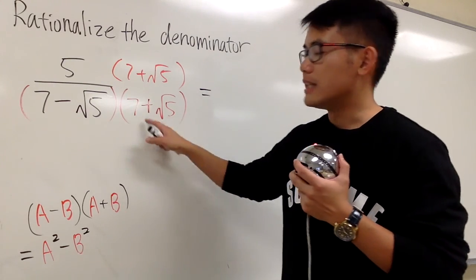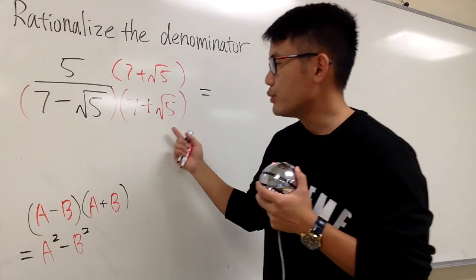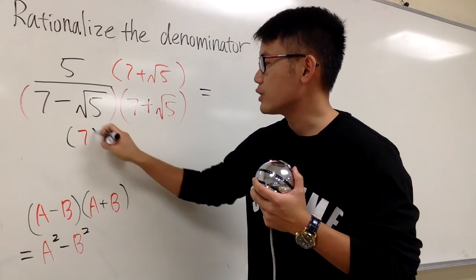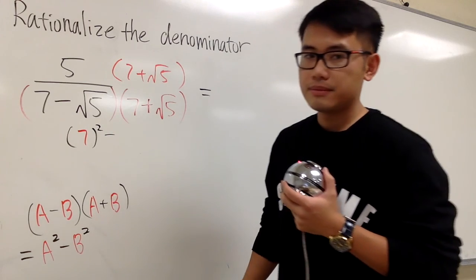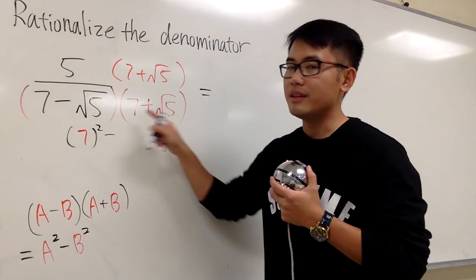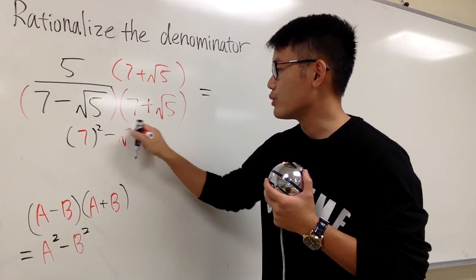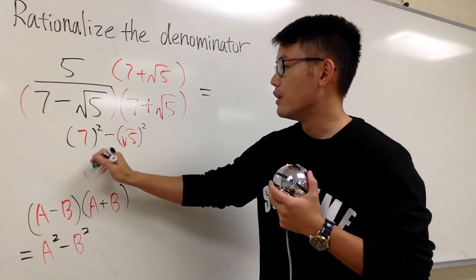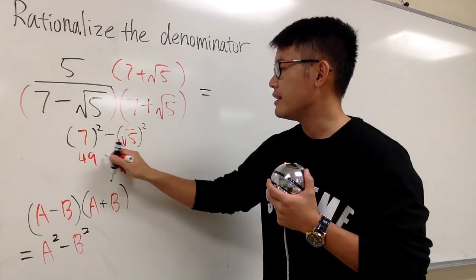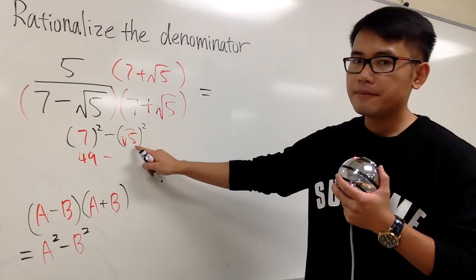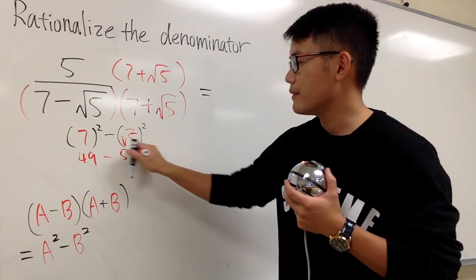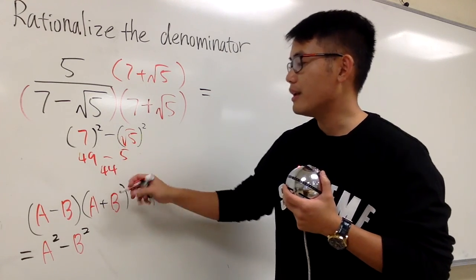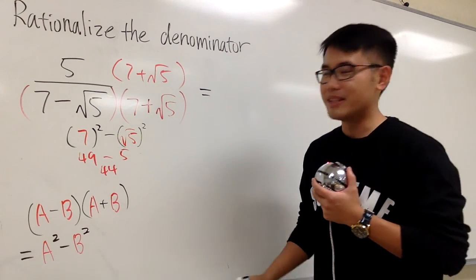So 7 minus square root of 5 times 7 plus square root of 5. All we have to do is take the first term, which is the 7, so let me put it down, and we square that. And we minus, we put down the second term, which is the square root of 5, and then we square that. Work this out. This is 49 minus square root of 5. Square is just a 5. 49 minus 5 is 44, and that's it for the denominator.